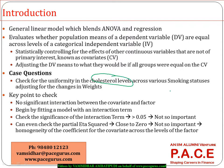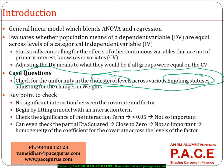Check for the uniformity in the cholesterol levels across the various smoking statuses. Up to this point, this is nothing but one-way ANOVA. But the cholesterol levels could be different across various smoking statuses because the weights are different across those groups. If that is the case, then probably the cholesterol levels are not based on smoking status but rather on weight.